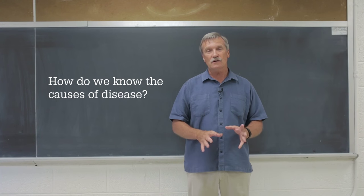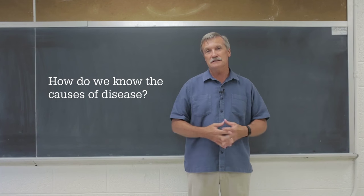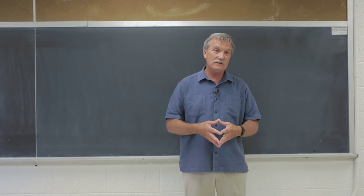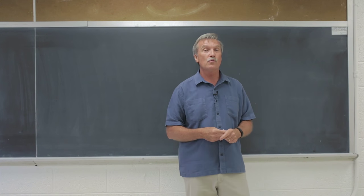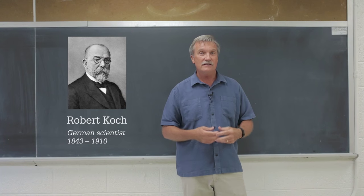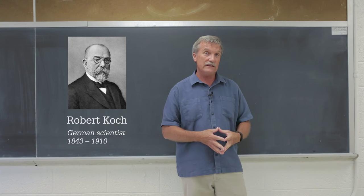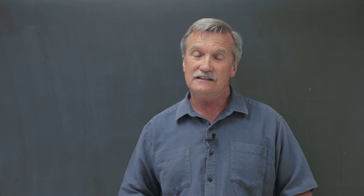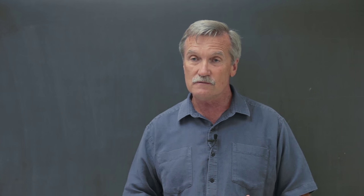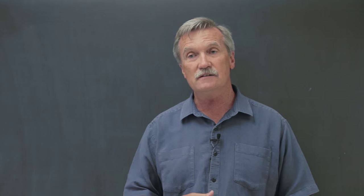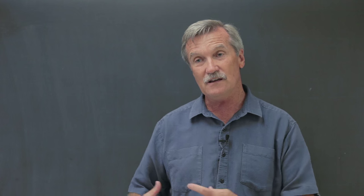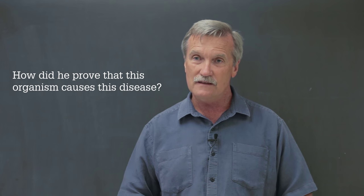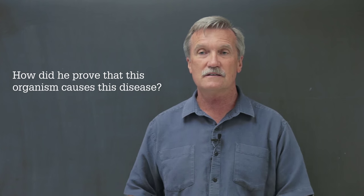How do we know the causes of disease? The answer to this question started some 130 years ago with a German scientist named Robert Koch. His specific interest was with an animal disease, anthrax, of sheep. In his observations, he had observed in diseased sheep the presence of a bacterium, whereas in healthy sheep there was no bacteria. But how did he prove that this organism caused this disease?